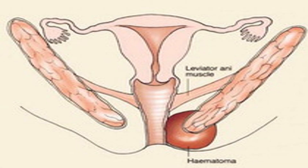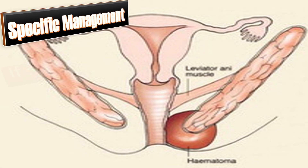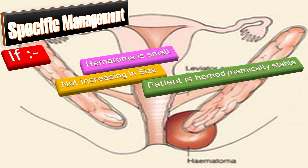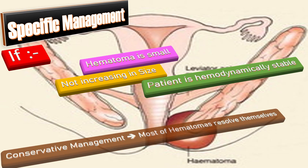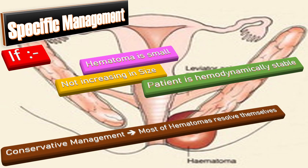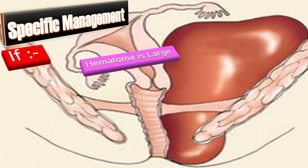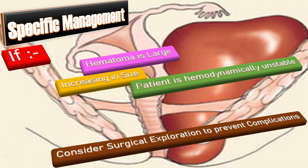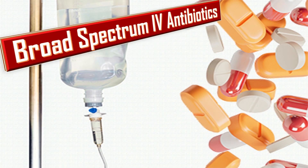For specific management: if the hematoma is small, not increasing in size, and the patient is hemodynamically stable, go for conservative management, as most hematomas resolve on their own. If the hematoma is large, increasing in size, and the patient is hemodynamically unstable, consider surgical exploration to prevent the complications mentioned. Broad-spectrum IV antibiotics are prescribed to reduce the risk of infection.